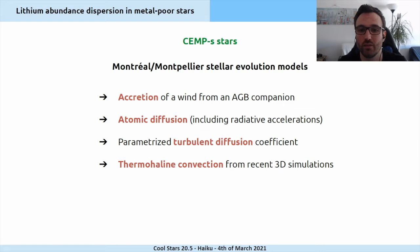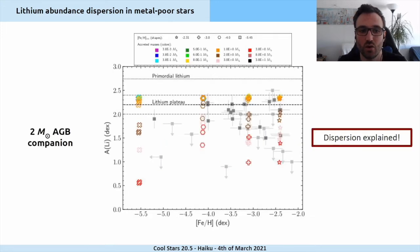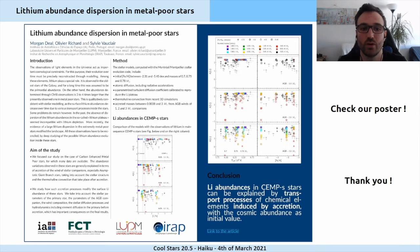We computed Population II stellar models with the Montreal-Montpellier evolution code including this effect of accretion. We included atomic diffusion and especially studied the impact of thermohaline convection triggered by the unstable mean molecular weight gradient constructed by accretion using a recent prescription. This instability is known to induce lithium depletion. We show that lithium dispersion can be explained by the accretion of matter starting from an initial primordial lithium. If you want more details, please check our poster. Thank you for your attention.